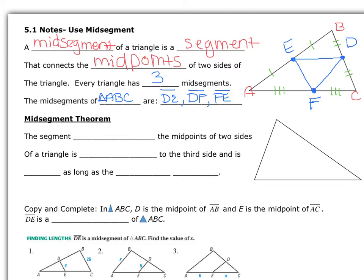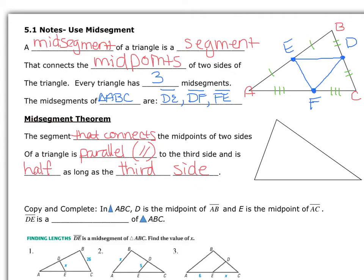The mid-segment — the segment that connects the midpoints of two sides of a triangle — is parallel to the third side. Remember the symbol for parallel is the elongated double L's. It is also half as long as the third side. So a mid-segment is the segment that connects the midpoints of two sides of a triangle, parallel to and half as long as the third side.